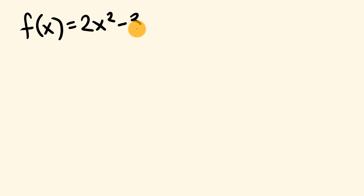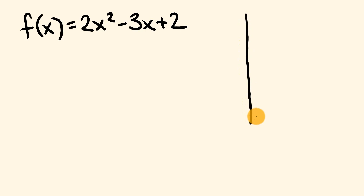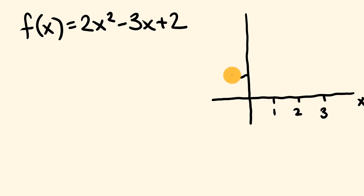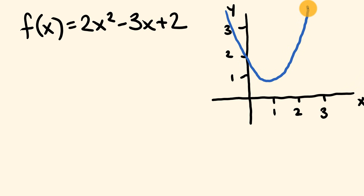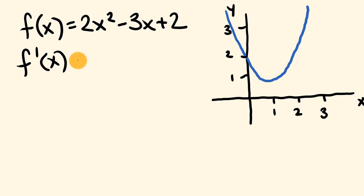Rather than just choosing two different points to work out an average slope, calculus allows us to get the exact slope at an exact point on the graph. Let me show you this using the following curve: f(x) equals 2x squared minus 3x plus 2. I'll draw the axis — values 1, 2, 3 on both axes. This function comes down through 2, curves around, and goes back up. The slope varies at different points. We can use something called the derivative of the slope, written as f'(x), to work out a rule giving the exact slope at any given point.